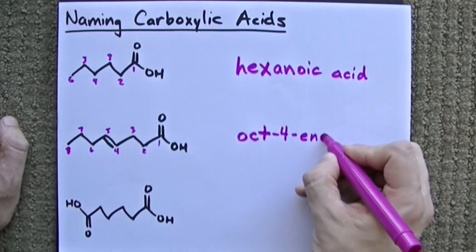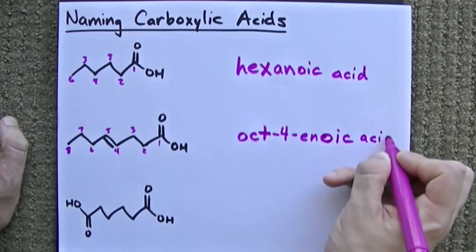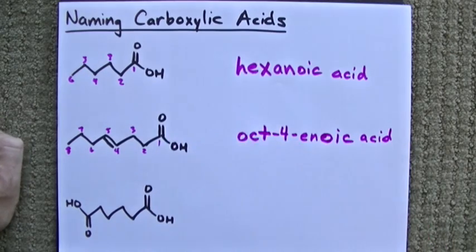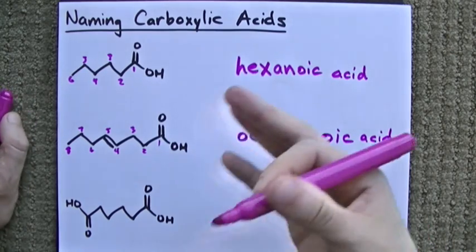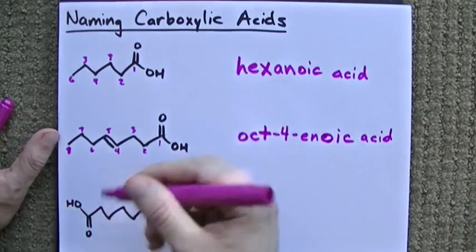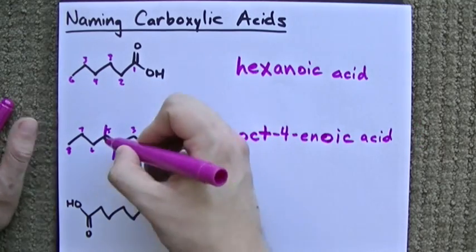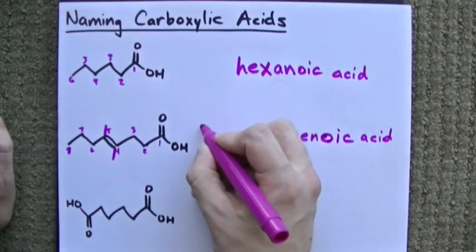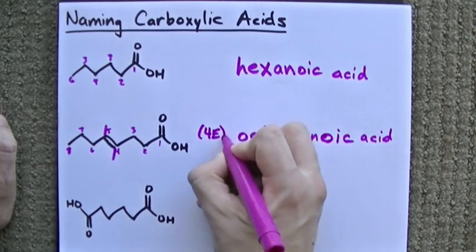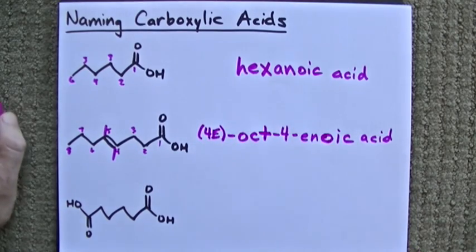And again, it's going to be oic acid at the end because it's a COOH. If you're worried about the stereochemistry here, I've kind of drawn this in a trans configuration. So that means I'm going to call it 4E. You could just as easily call it trans.